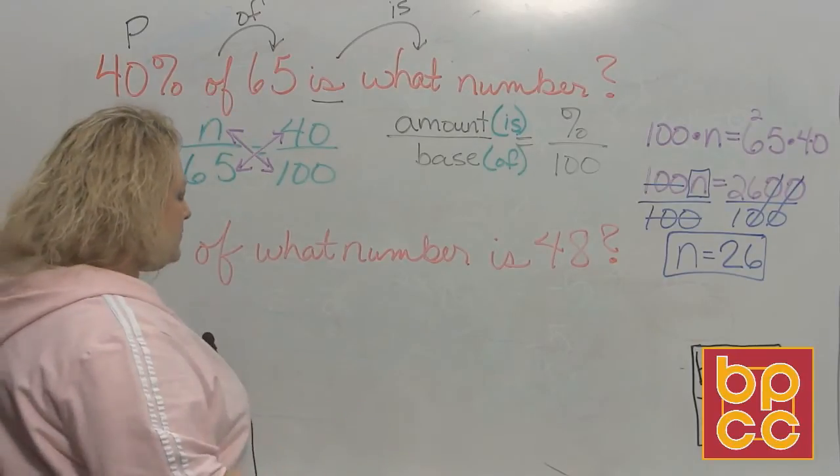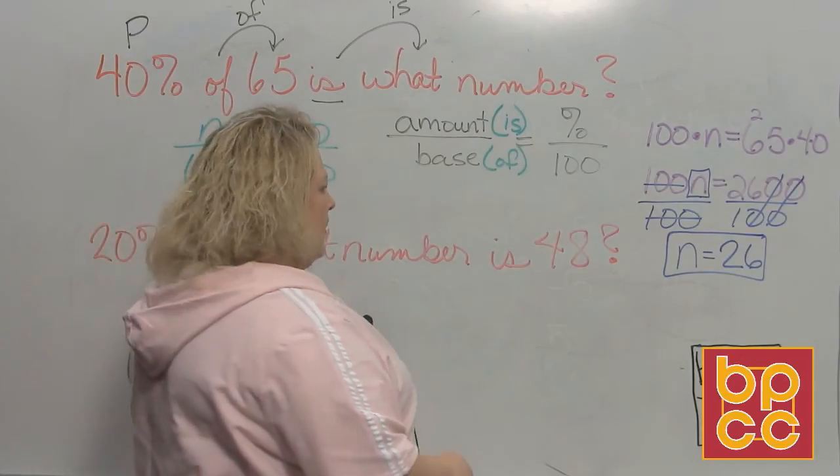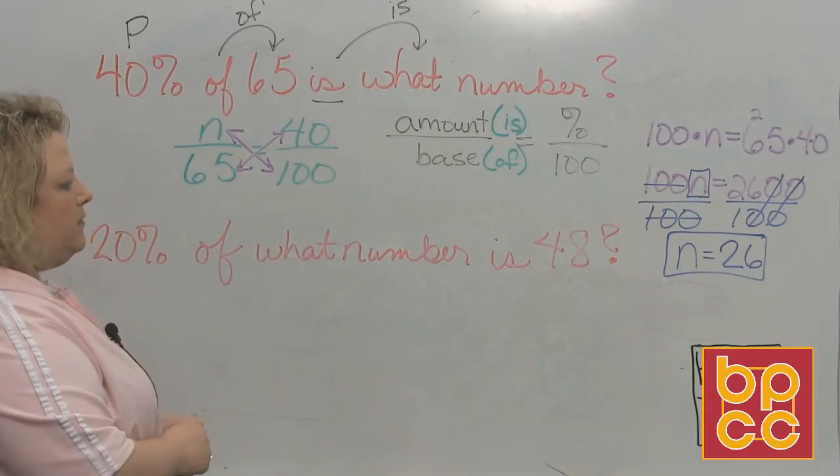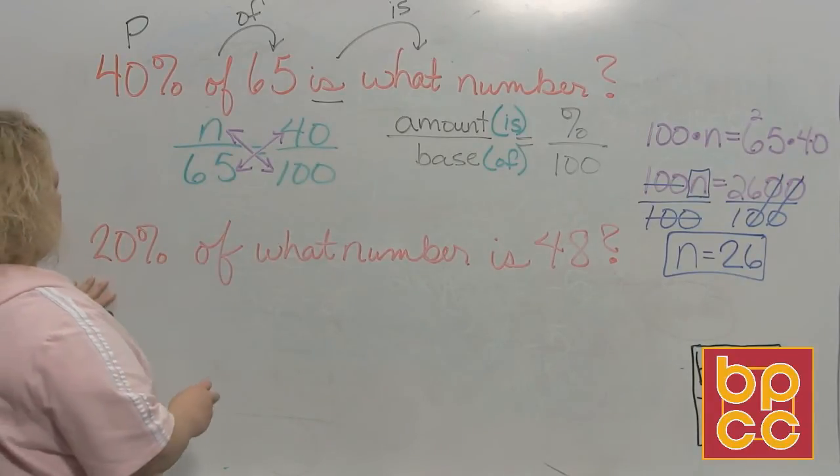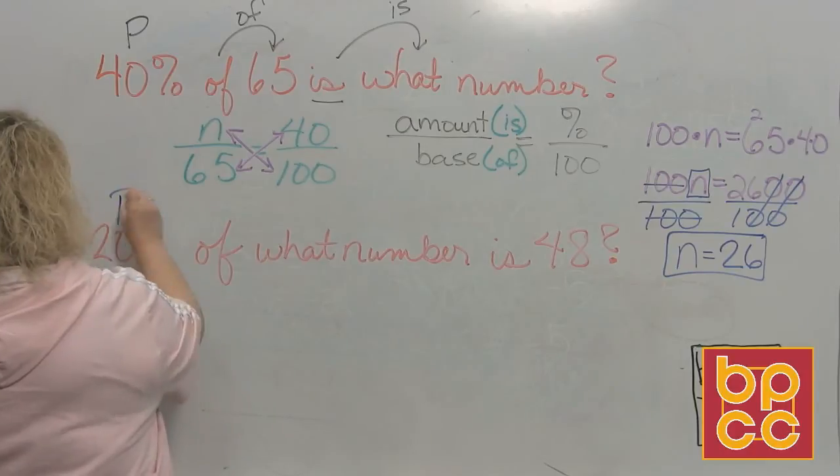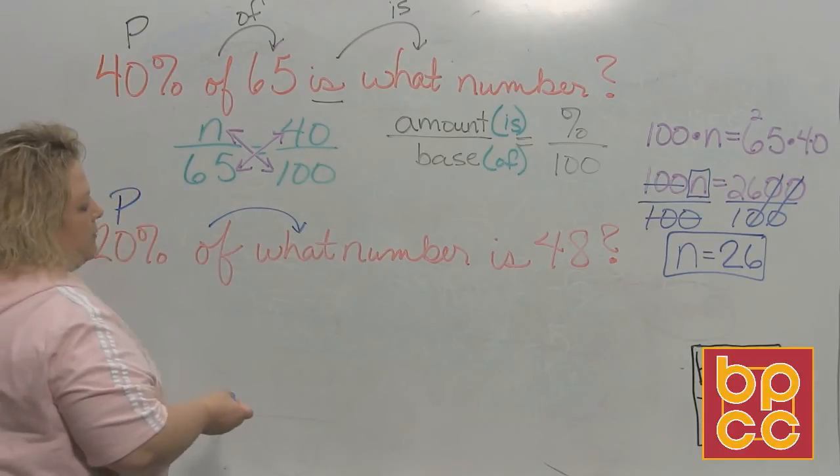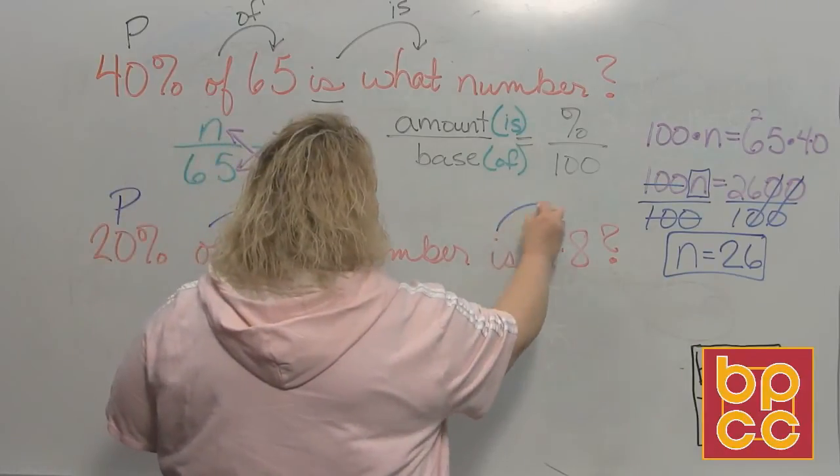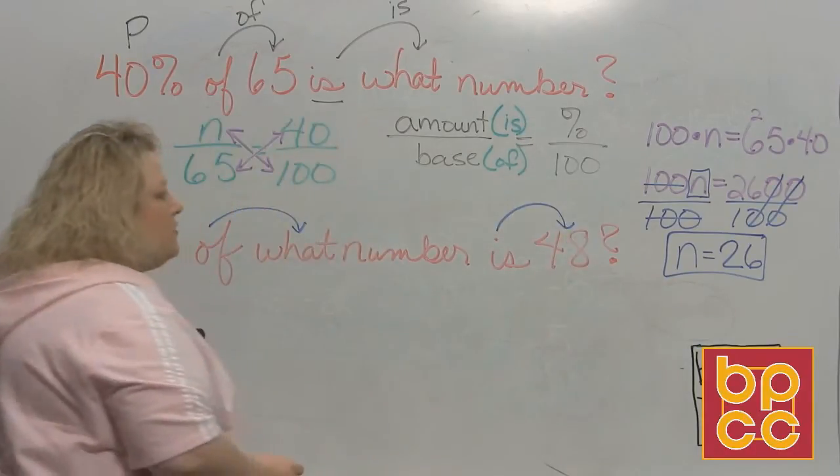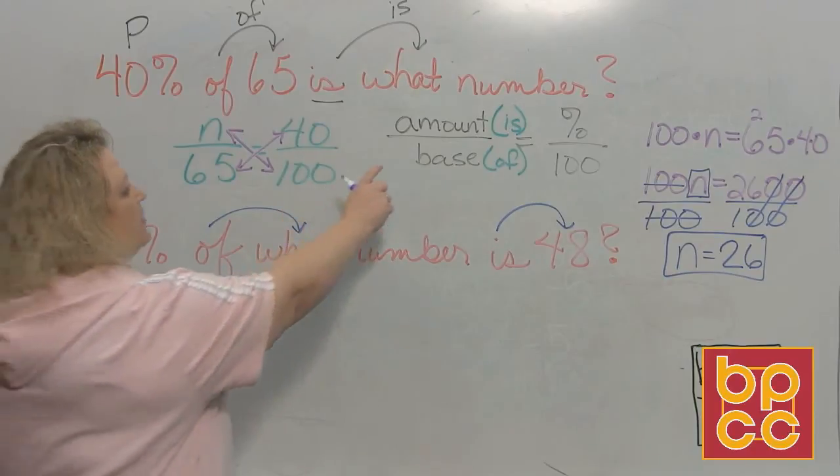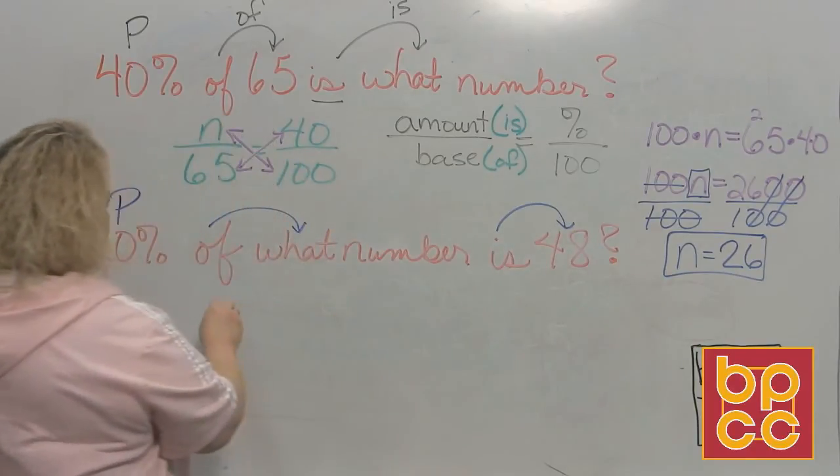Now let's do another one because this one is missing a different value. 20%, there's my P, of what? I don't know what, so there's my missing item, is 48. So we're going to set this up. The amount 'is', is goes on top, so that's 48.